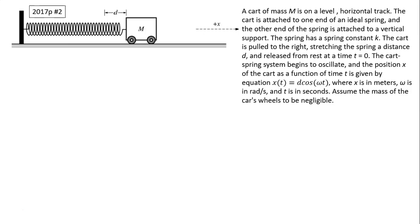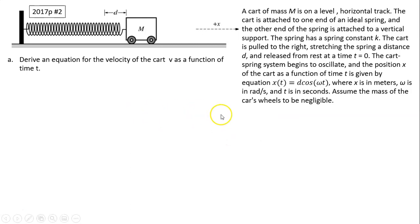The card-spring system begins to oscillate and the position x of the card as a function of time t is given by x(t) = d·cos(ωt), where x is in meters, ω is in radians per second, and t is in seconds. Assume the mass of the card's wheels to be negligible.